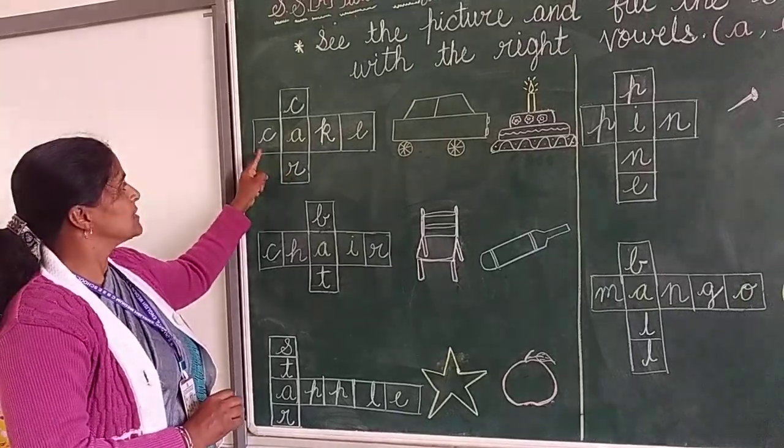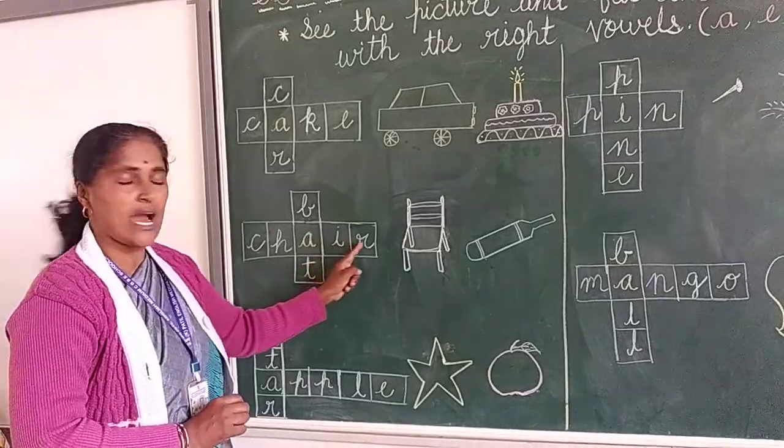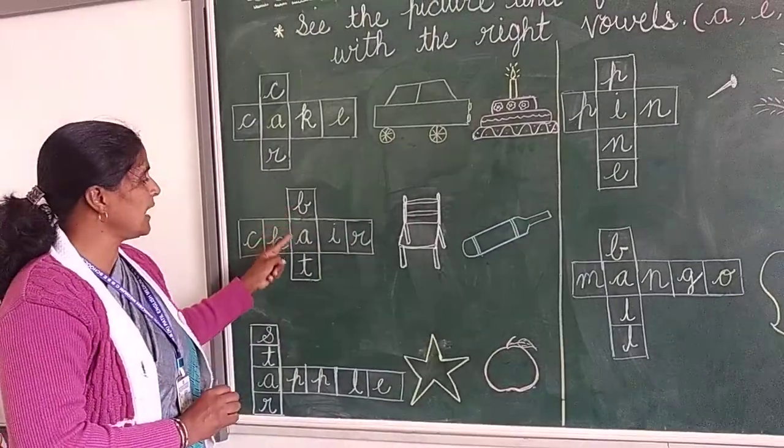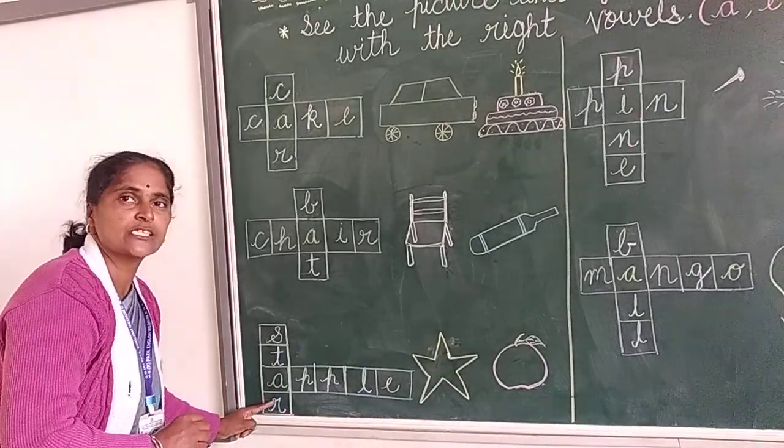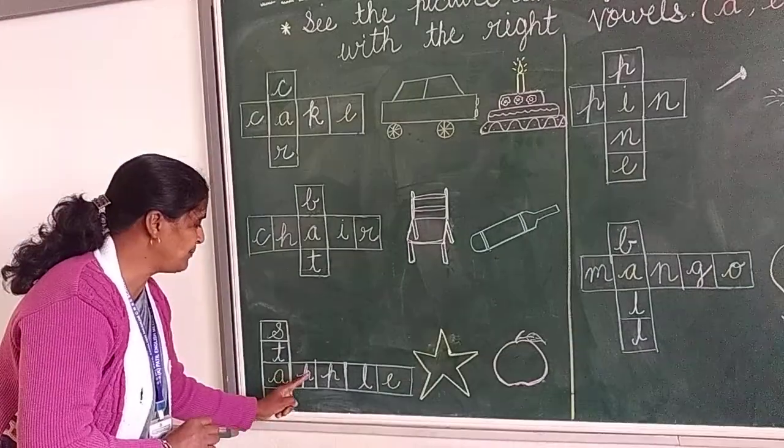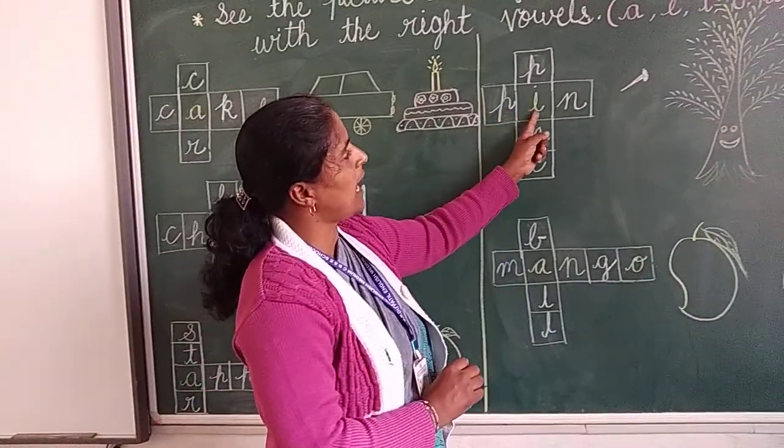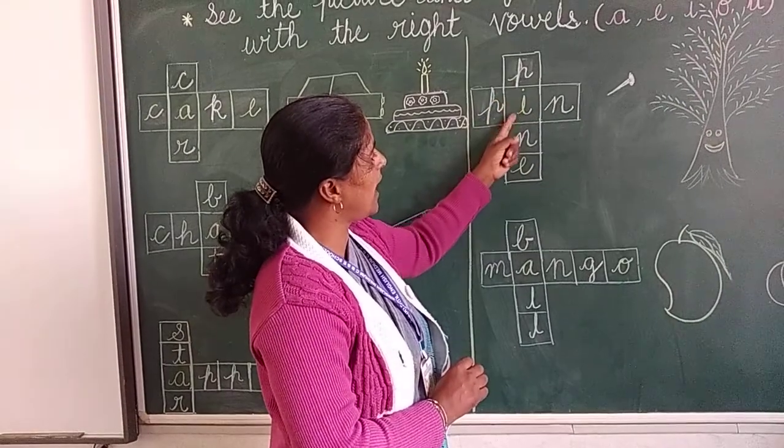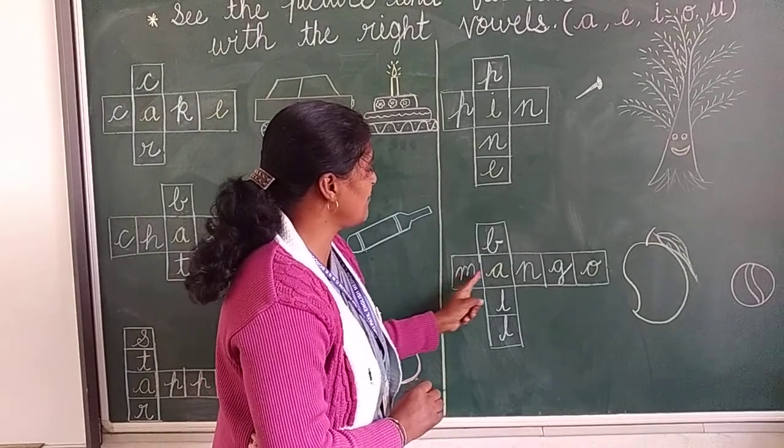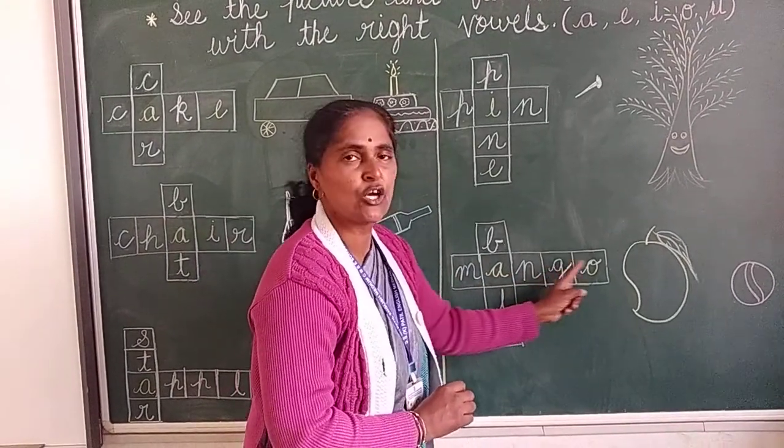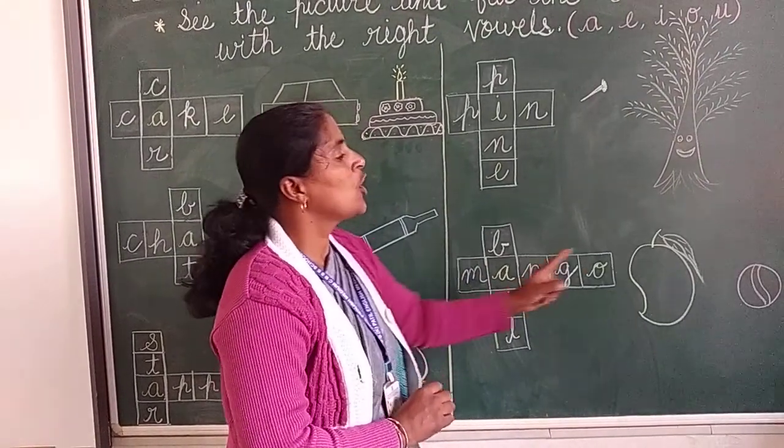Car: C-A-R. Cake: C-A-K-E. Chair: C-H-A-I-R. Bat: B-A-T. Star: S-T-A-R. Apple: A-P-P-L-E. Pin: P-I-N. Pine: P-I-N-E. Mango: M-A-N-G-O. Ball: B-A-L-L.